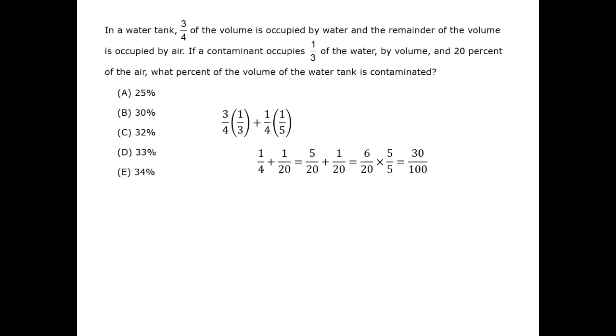Putting both fractions in a common denominator of 20, we're then able to add. When we have 6 over 20, we can convert the denominator into 100 in order to get a percentage, and we get 30 over 100.